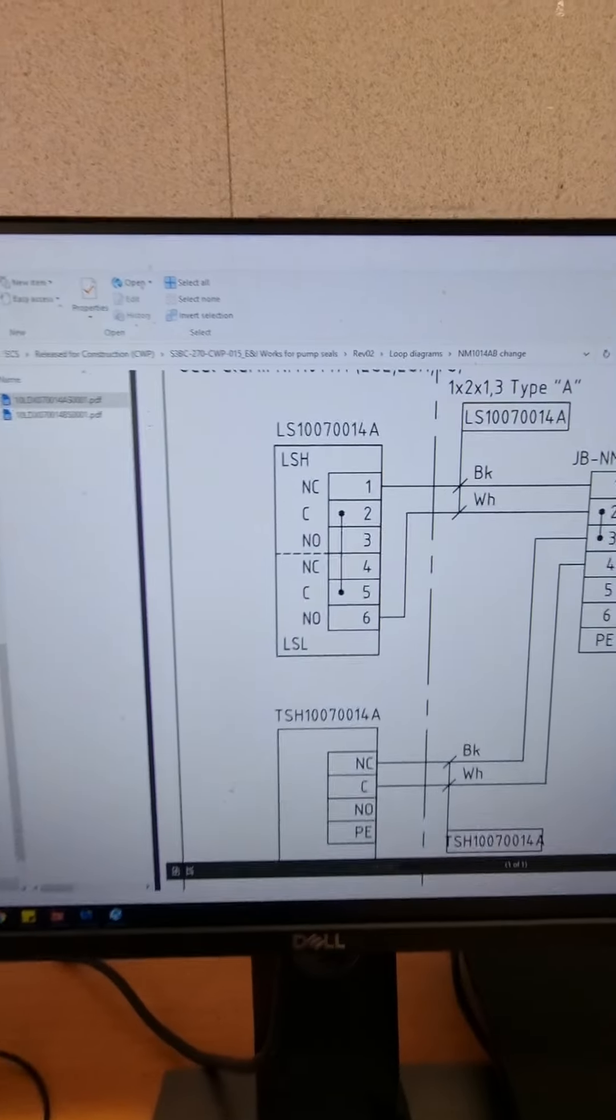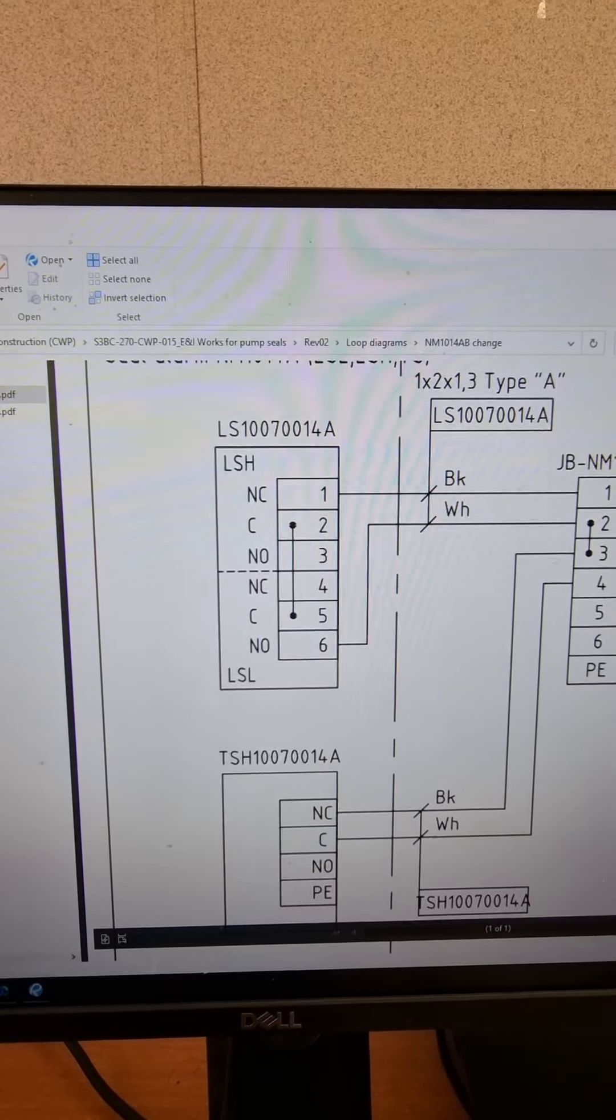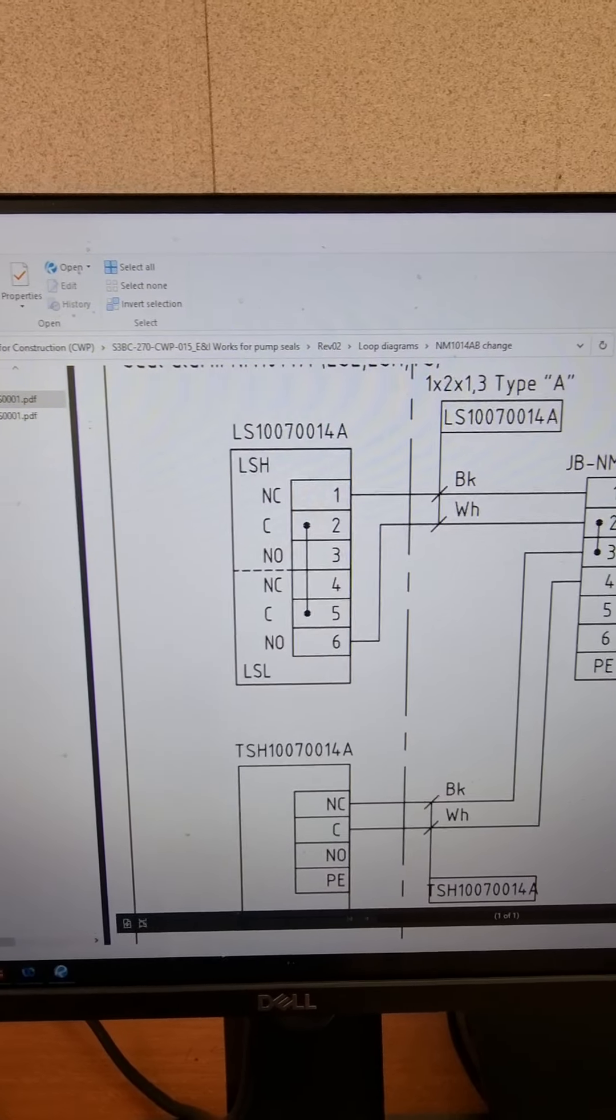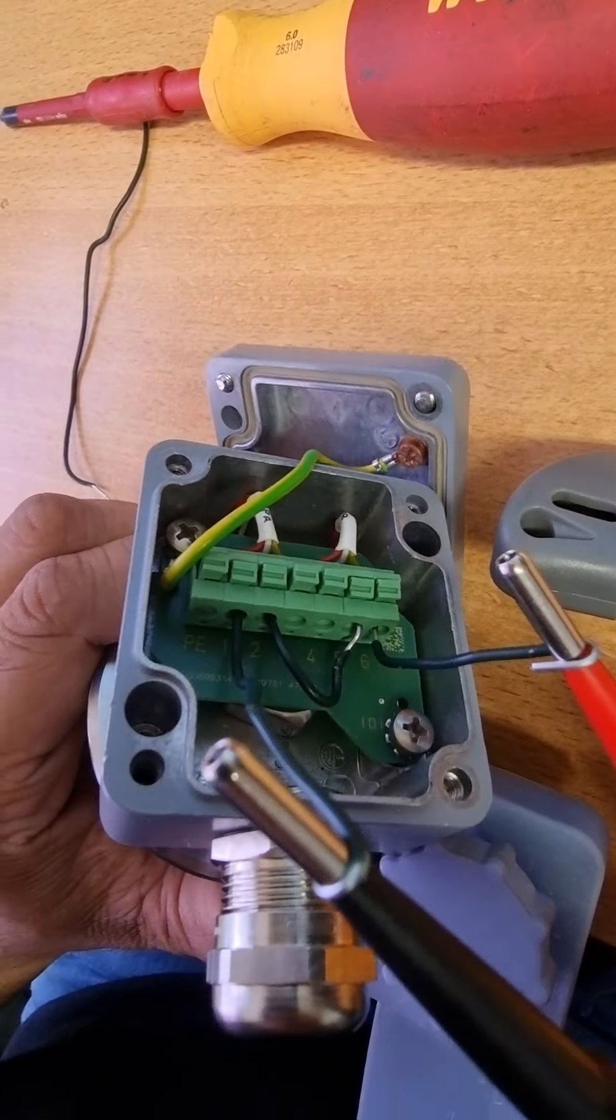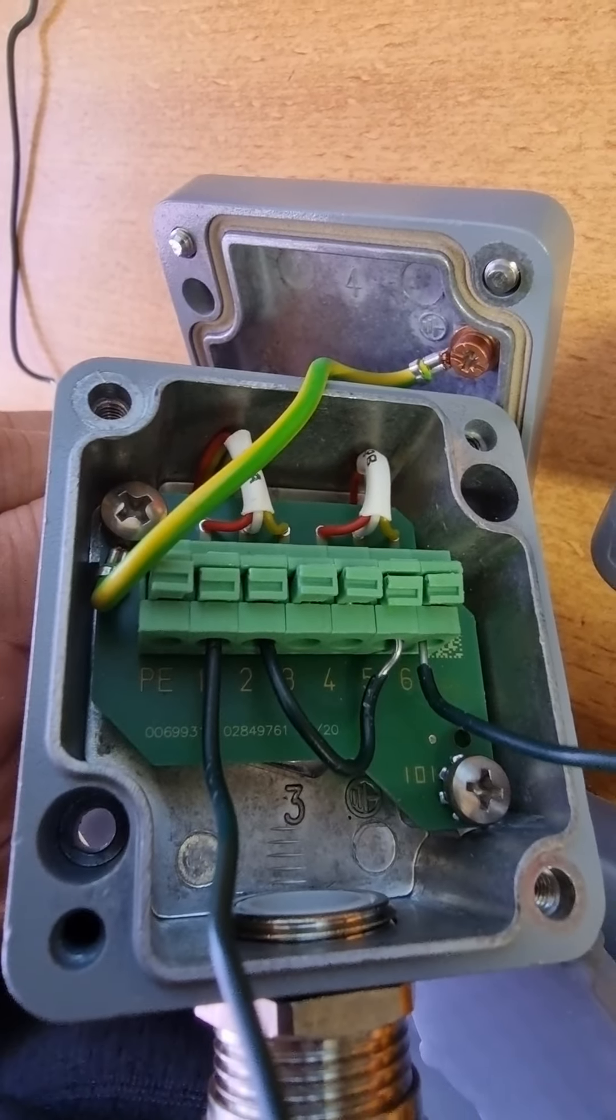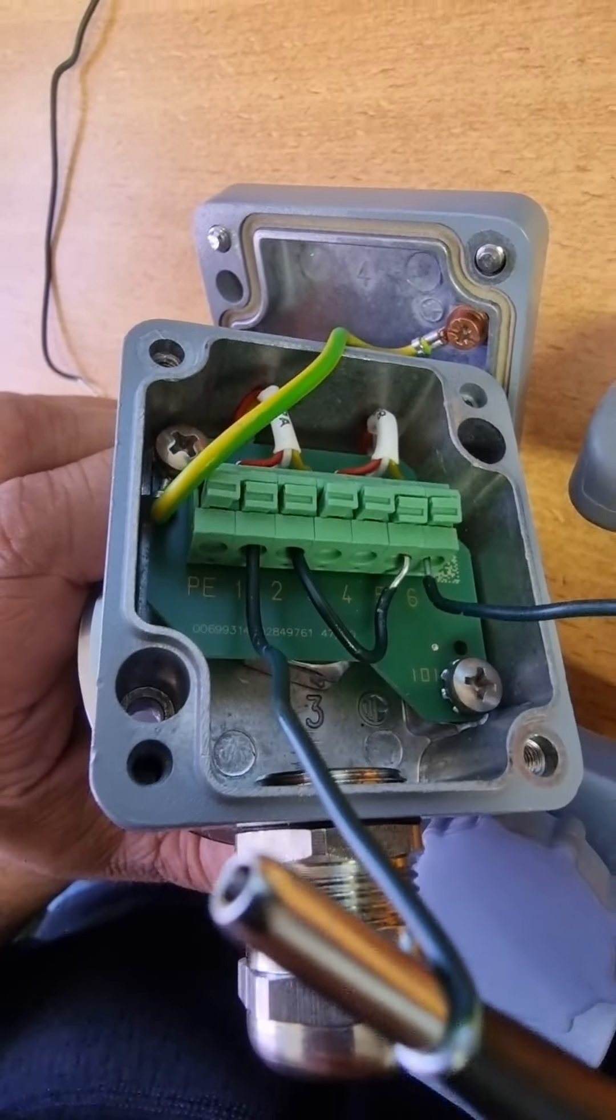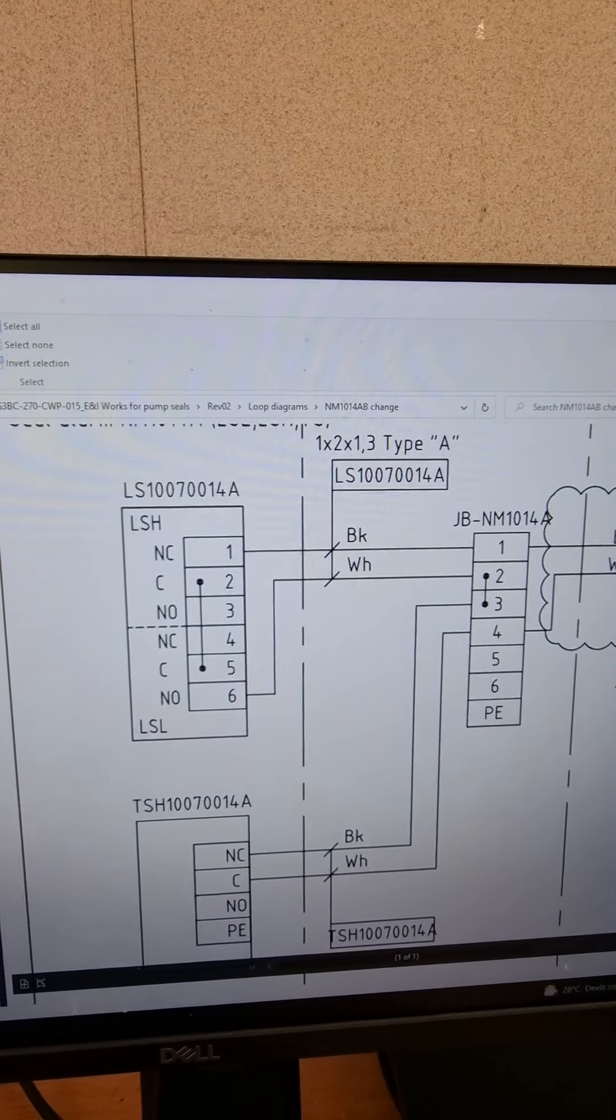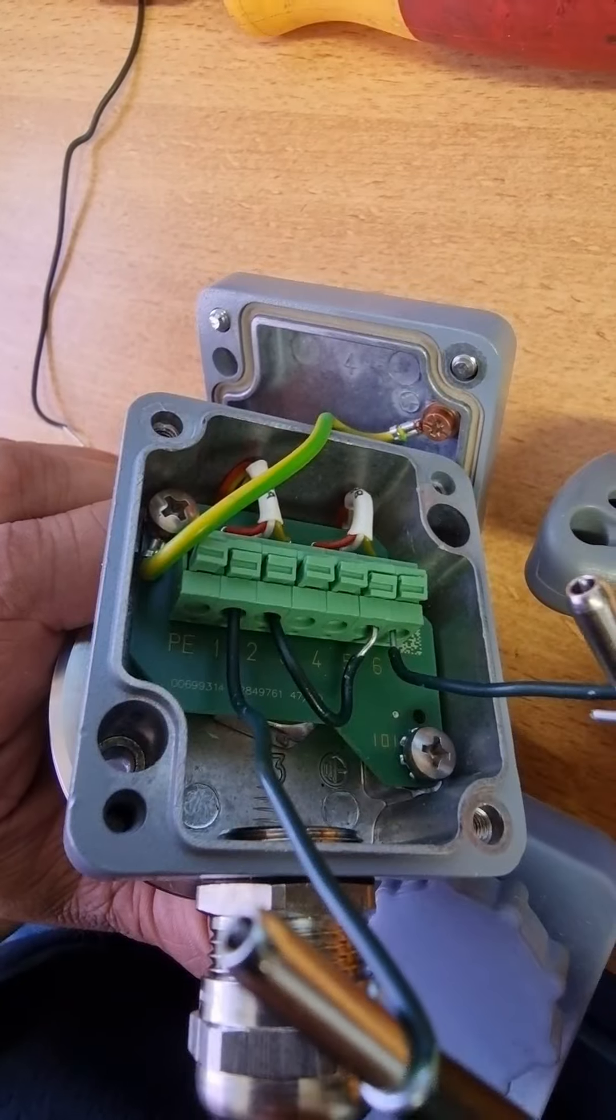Now the complete wiring as shown in the loop diagram: jumper between two and five. Jumper between two and five done. One and six, instrument cable is connected.